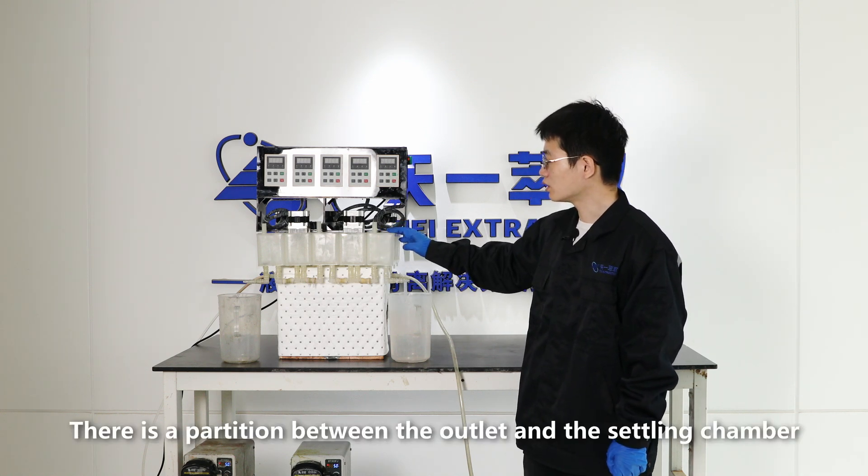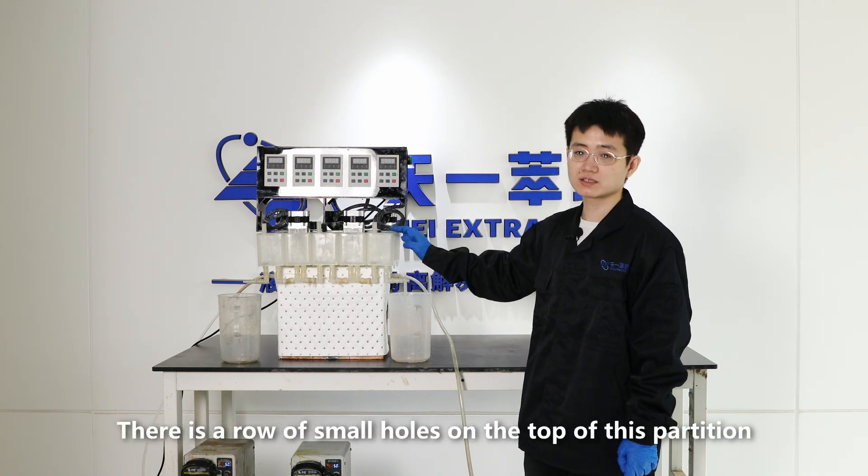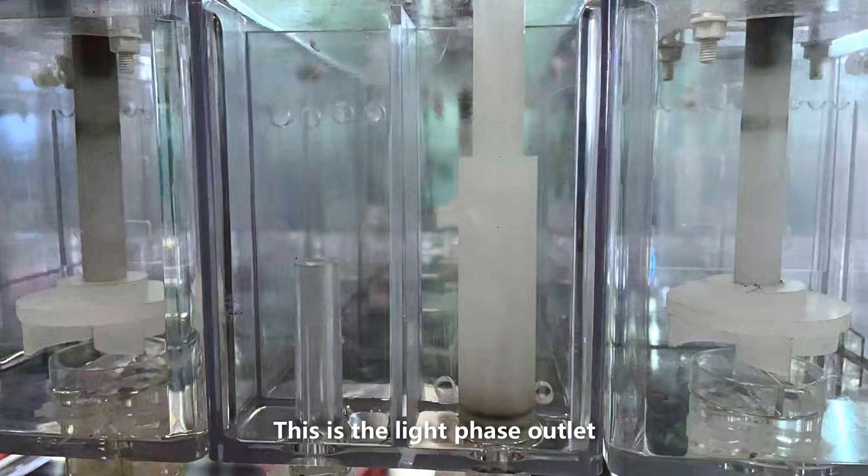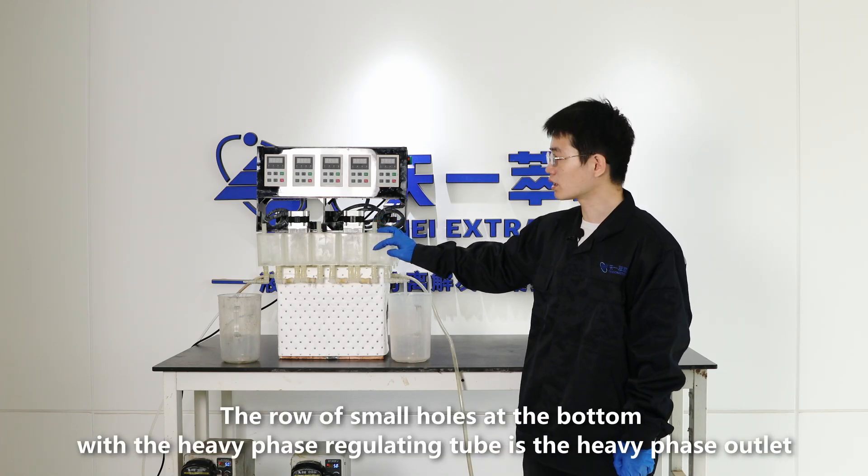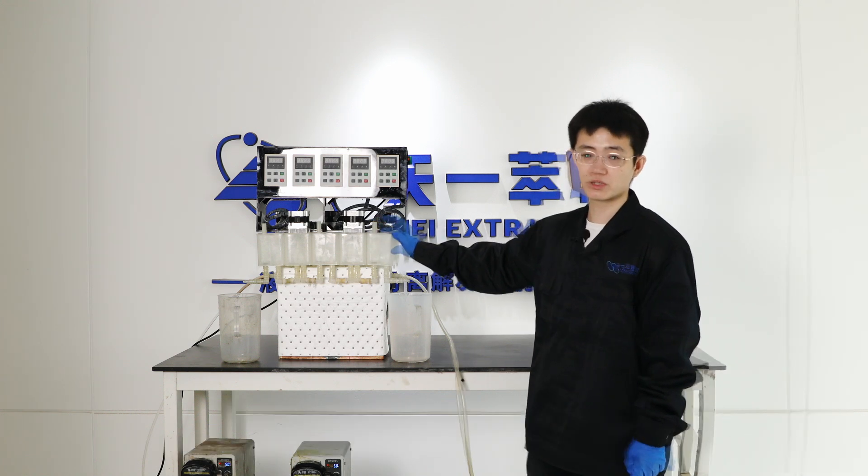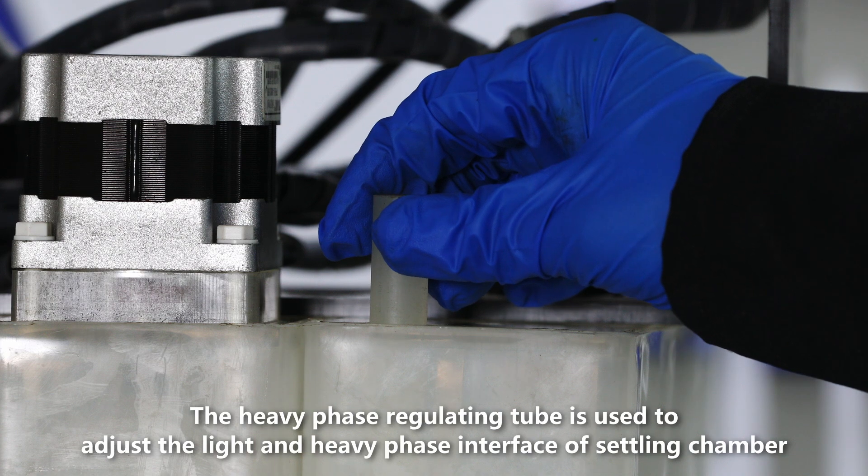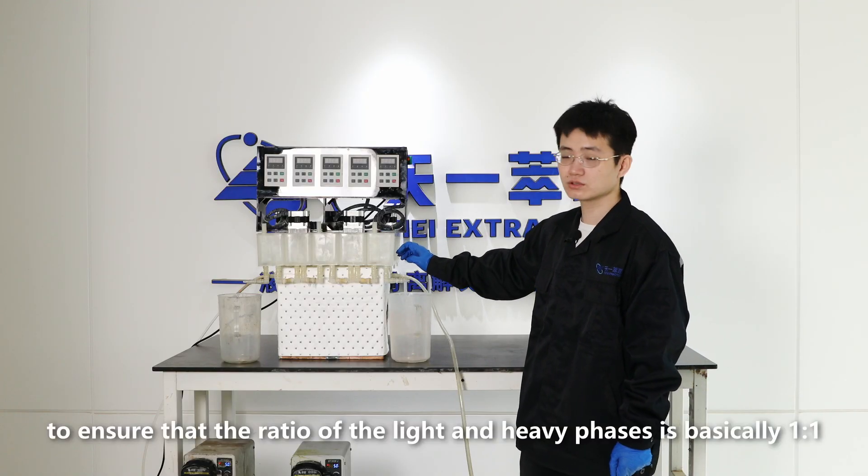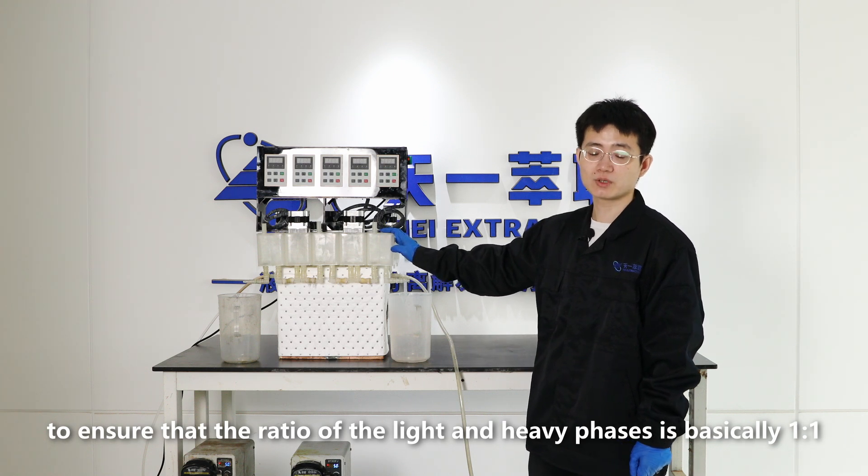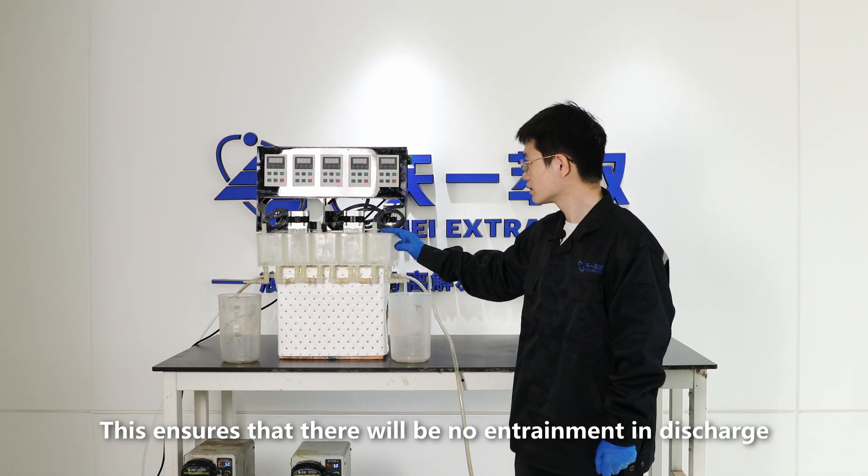There is a partition between the outlet and the settling chamber. There is a row of small holes on the top of this partition. This is the light phase outlet. The row of small holes at the bottom with the heavy phase regulating tube is the heavy phase outlet. The heavy phase regulating tube is used to adjust the light and heavy phase interface of settling chamber to ensure that the ratio of the light and heavy phases is basically one to one. This ensures that there will be no entrainment in discharge.